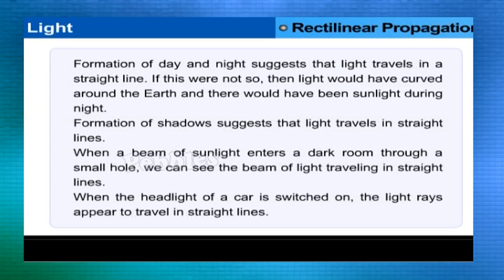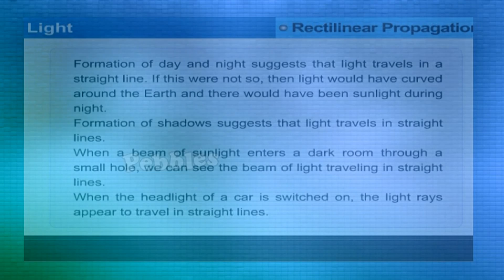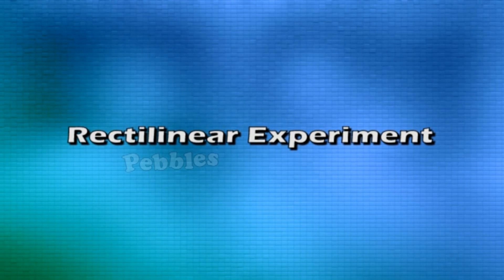When a beam of sunlight enters a dark room through a small hole, we can see the beam of light traveling in straight lines. Also, when the headlight of a car is switched on, the light rays appear to travel in straight lines.